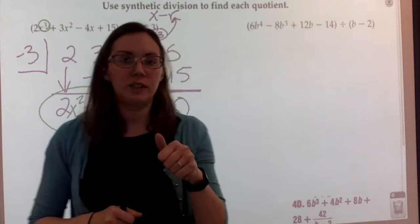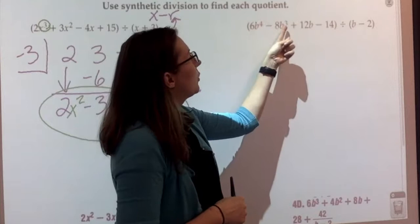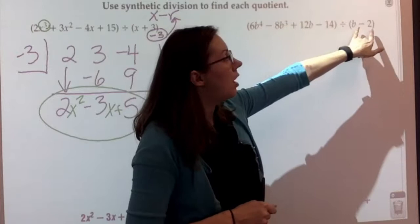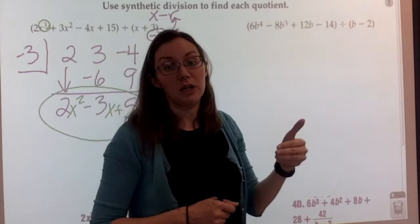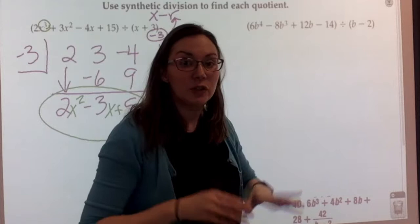Now I want you to pause the video and try to solve this one. I want to point out that the powers go 4, 3, 1 — so you're going to need a filler. The r value is a little more obvious than in the first one. This one is going to have a remainder, so if you're not exactly sure what to do with that, you'll see in a second. So seriously, pause the video, take a second, and solve that problem.